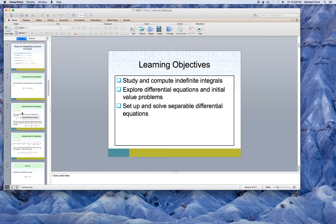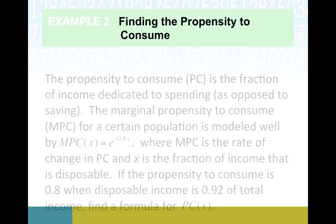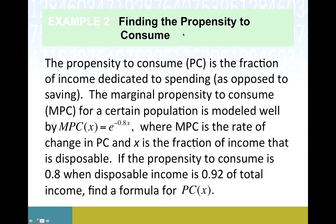Actually, first we're going to try to tackle a word problem from the previous piece. We spent a lot of time on a couple of introductory examples, but now we'll do everyone's favorite word problem. So, propensity to consume, we're going to call that PC, is the fraction of income dedicated to spending as opposed to saving. We're assuming one of two things happens: either people spend money or they sock it away for another time.